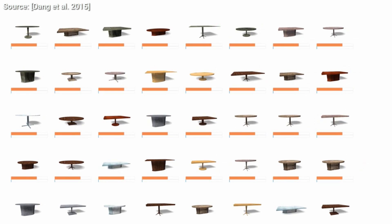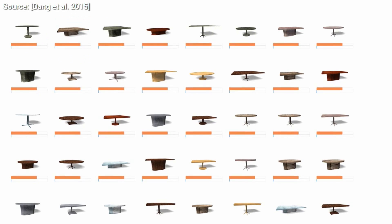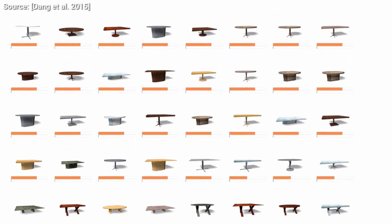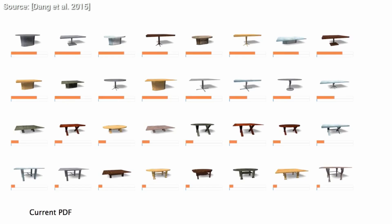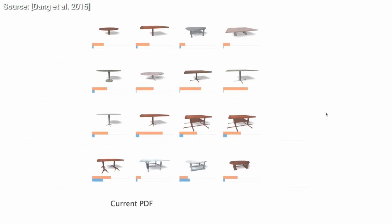The orange bars show the predicted score for new models created by the algorithm. A larger value means that the system expects the user to score these high, and the blue bars mean uncertainty. Generally, we are looking for solutions with large orange and small blue bars. This means that the algorithm is confident that a given model is in line with our preferences. And we get exactly what we were looking for: novel, balanced table designs with one leg or crossed legs.